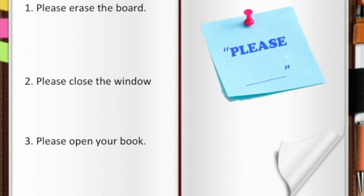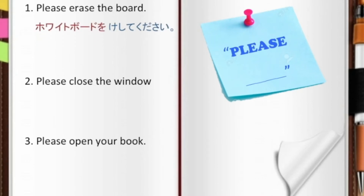Now let's add direct objects to the sentences. For example, please erase the board. The verb for erase is kesu. First, we conjugate it into te-form: kesite. Then we add kudasai and the direct object: howaito boodo wo kesite kudasai — please erase the board.